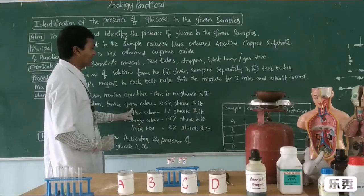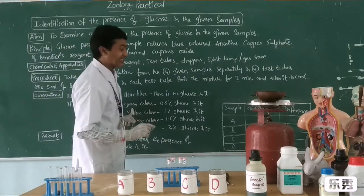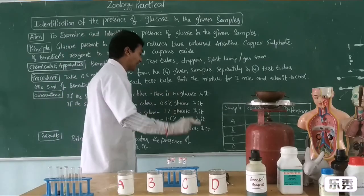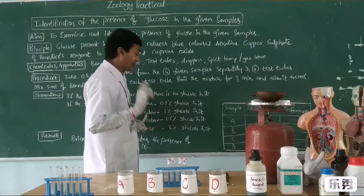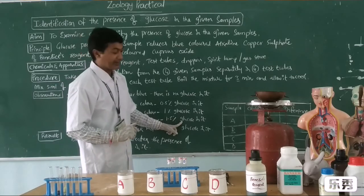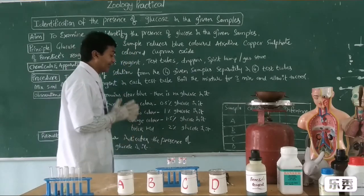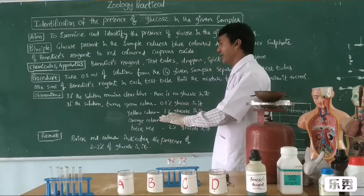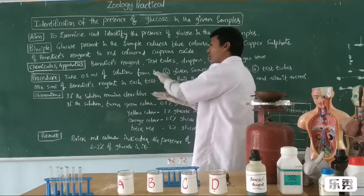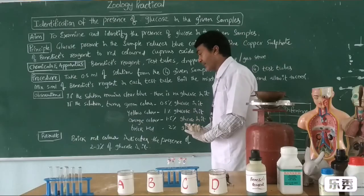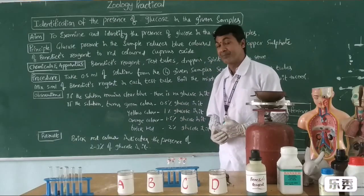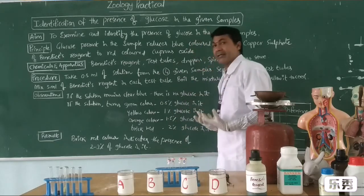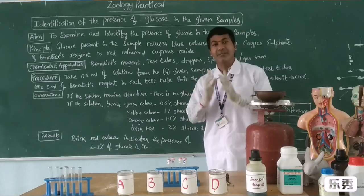If the solution turns green in color, the glucose percent is 0.5%. If it comes into yellow color, glucose is present at 1%. If it turns orange, glucose is 1.5%. If it turns brick red, we identify 2% of glucose. All these color changes indicate glucose presence. If the color does not change, we can say no glucose. That is why it is called a qualitative reagent — it not only detects glucose but also determines its percentage. If I got yellow color, I can say glucose is present at 1%. If my sample got brick red, then glucose is present at 2%.